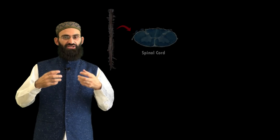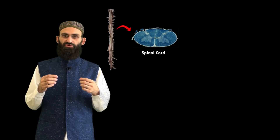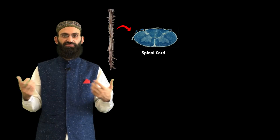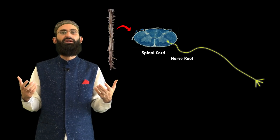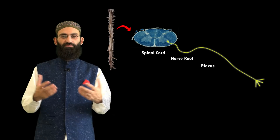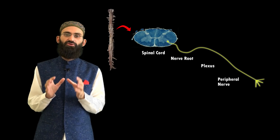Lower motor neurons are the neurons that innervate skeletal muscles. Skeletal muscles of the head and neck are innervated by lower motor neurons located in the brainstem — the cranial motor nuclei — while skeletal muscles of the upper and lower limbs are innervated by lower motor neurons located in the anterior horns of the spinal cord. These lower motor neurons send their axons through spinal roots, spinal nerves, and plexuses such as the brachial plexus and lumbar plexus, then form peripheral nerves that innervate groups of skeletal muscles.